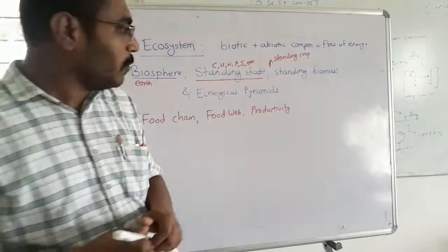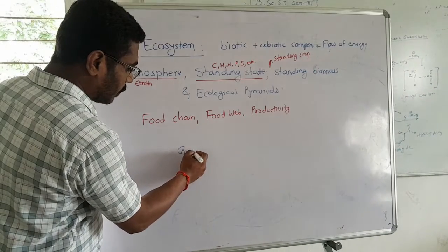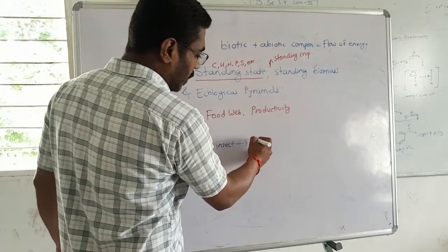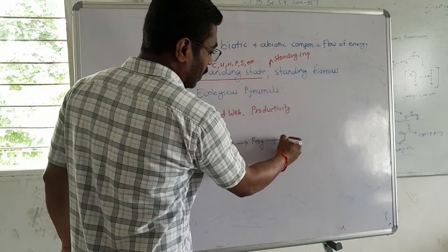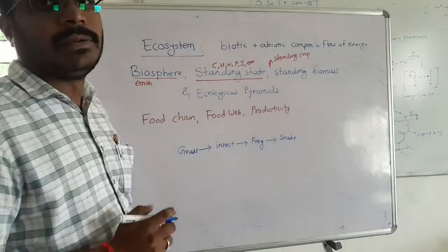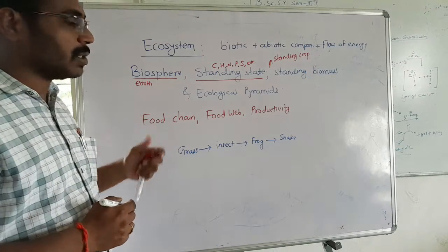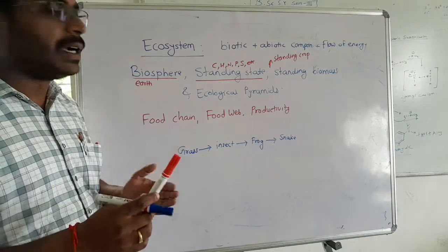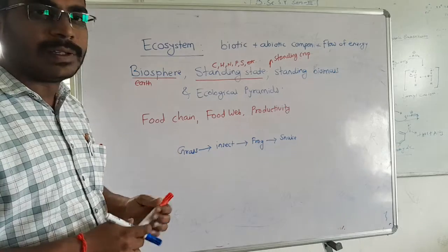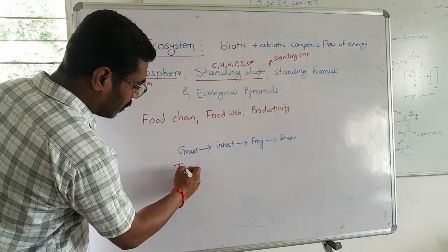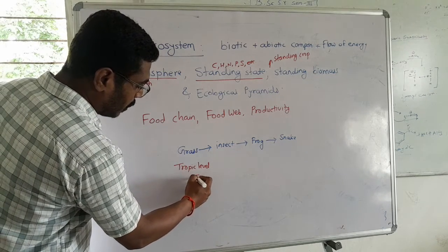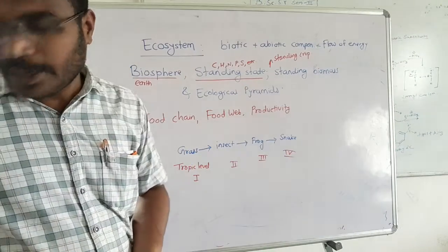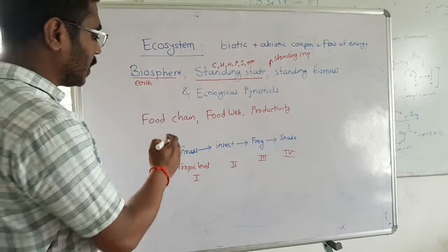For example, grass is eaten by certain insects, those insects are eaten by frogs, and then frogs are eaten by snakes. These organisms are arranged in a succession according to their feeding habit or prey-predator mechanism. Grass represents the producer at the first trophic level, then insects at the second, frogs at the third, and snakes at the fourth. Such interrelated organisms form a food chain.